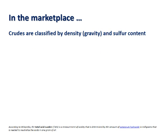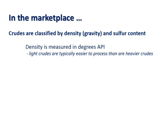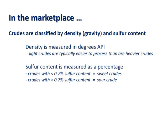In the marketplace, crudes are classified by density and sulfur content. Density is measured in degrees API. Light crudes are typically easier to process than heavy crudes. Sulfur content is measured as a percentage. Crudes with less than 0.7% sulfur content are considered sweet crudes; crudes with greater than 0.7% sulfur content are considered sour crudes.